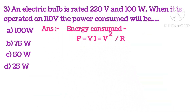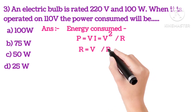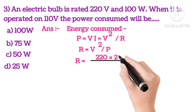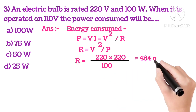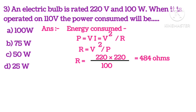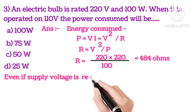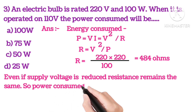Answer is: energy consumed is P equals V I or V squared upon R. So R will be V squared upon P. Substituting the values, we get resistance 484 ohms. Even if the voltage is reduced, resistance remains the same.